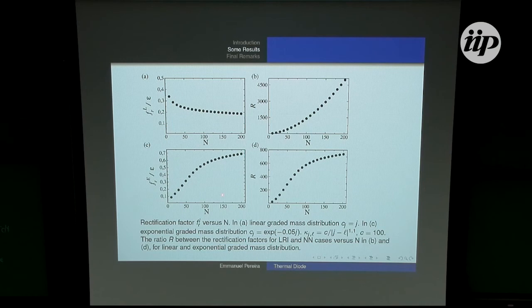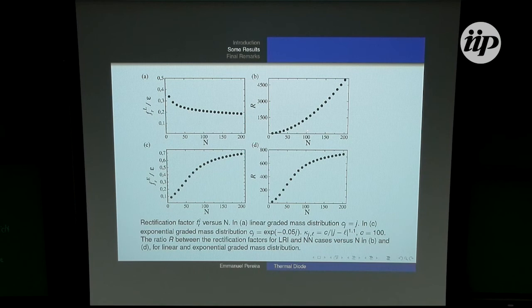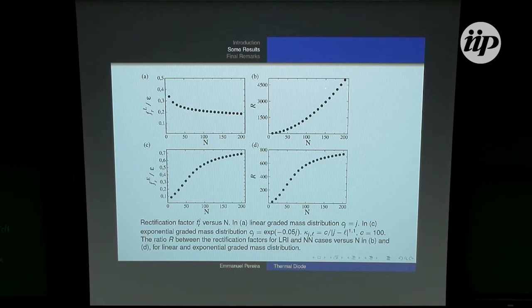The results show the ratio of the rectification for the system with long-range interaction compared to the system with nearest-neighbor interaction. We can see that with long-range interaction — for a linear mass distribution — we can multiply the rectification factor by almost 5,000. So we can use long-range interactions to dramatically increase the rectification factor.